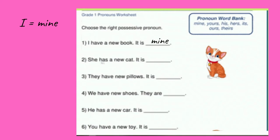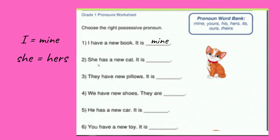Let's look at number two: 'She has a new cat. It is ___.' We need to look at the subject pronoun, which is 'she.' She goes to hers, so the answer is: 'It is hers.'